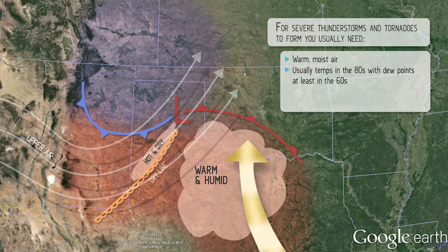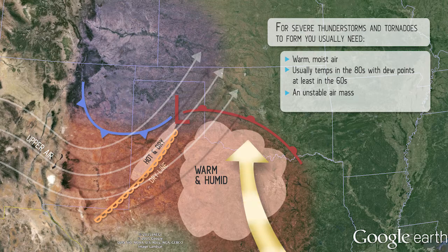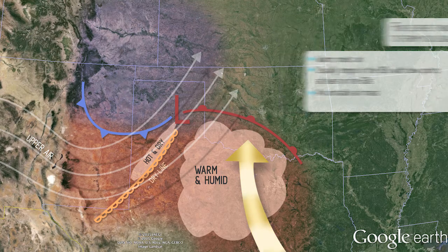These conditions occur at other times and places and readings, but generally 80s and 60s. In meteorology, never say never, because the first time you do that, you'll be embarrassed. You also need that unstable air mass that will go up sometime during the day and continue to go up.